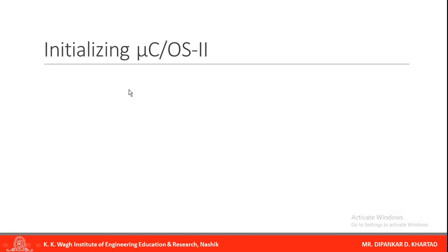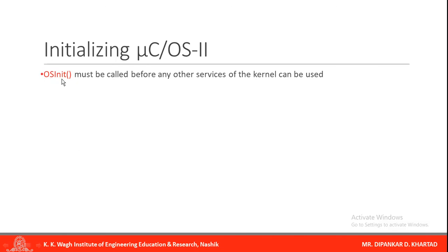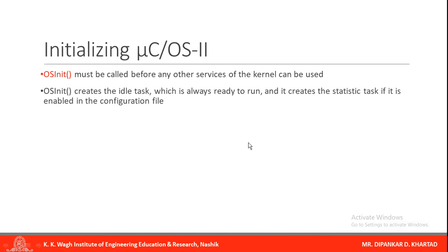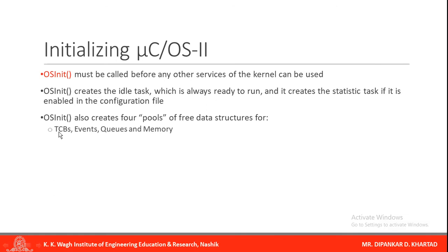Next is initialization of MuCos2. The important function here is OS init. This function must be called before any other kernel services can be used. OS init creates the idle task, which is already ready to run, and creates the statistics task if it is enabled in the configuration file. OS init also creates four pools of free data structures for: task control blocks, events, queues, and memory.